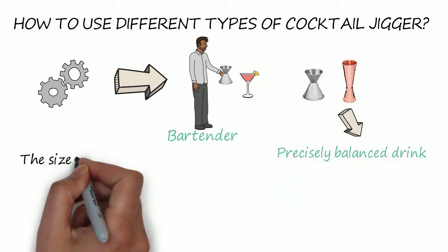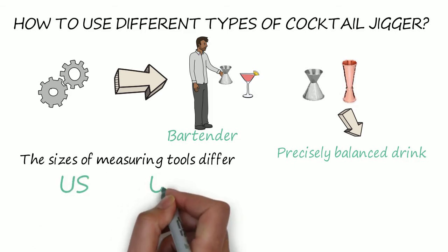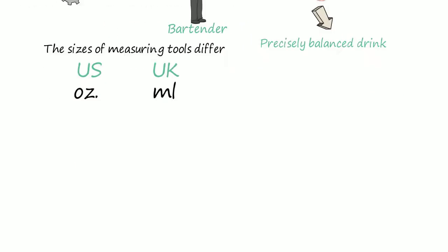The sizes of measuring tools depend on the measuring system and differ from country to country, so when buying them it's important not to confuse one with another. We're going to focus mainly on the two biggest cocktail markets: US and UK, which use ounces and milliliters.